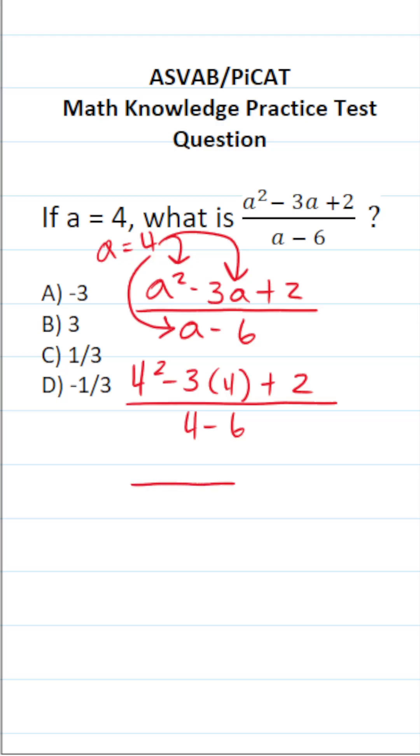I'm going to evaluate the denominator first. 4 minus 6 is negative 2. Now let's work on the numerator. 4 squared is 16. 3 times 4 is 12. So this is minus 12 plus 2.